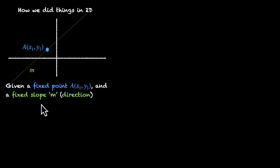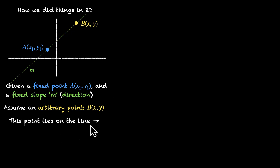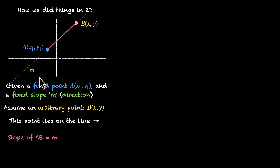Given a fixed point and a fixed slope, which is a fixed direction, we can figure out the equation of the line. We can assume an arbitrary point B on the line with coordinates x, y. If B is on the line, then line segment AB has the same slope as the line, which is M. If B is not on the line, this segment will have a different slope. So we can say the slope of AB equals the slope of the line, M.